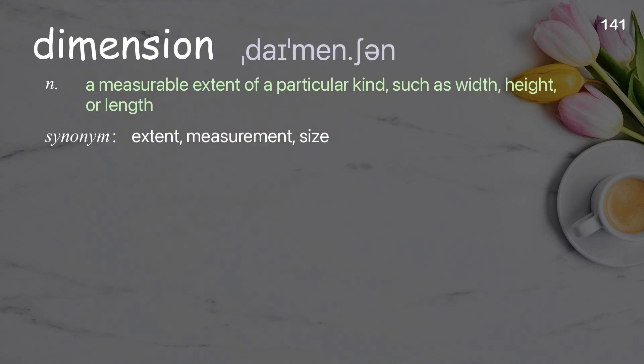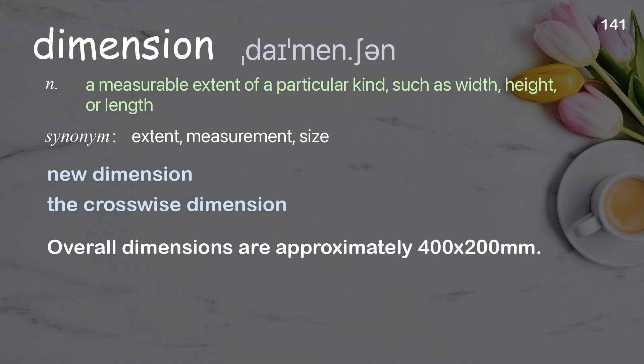Dimension: a measurable extent of a particular kind, such as width, height, or length. Examples: new dimension, the crosswise dimension. Overall dimensions are approximately 400 by 200 millimeters.